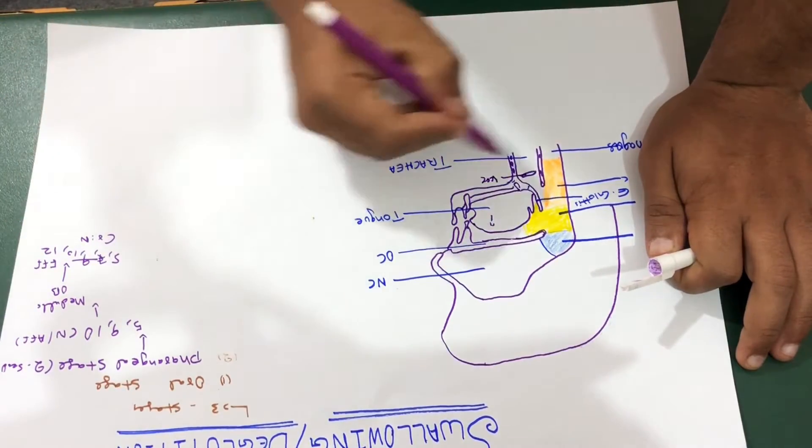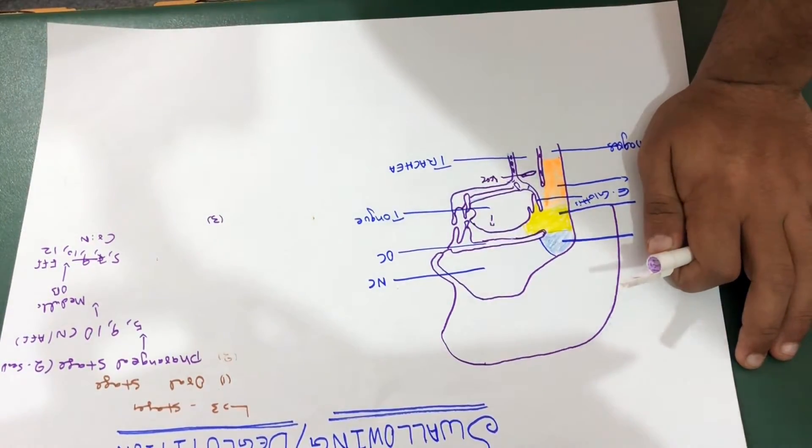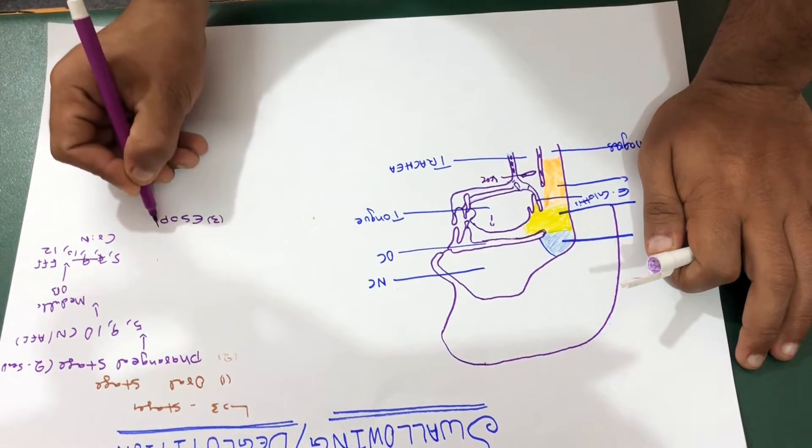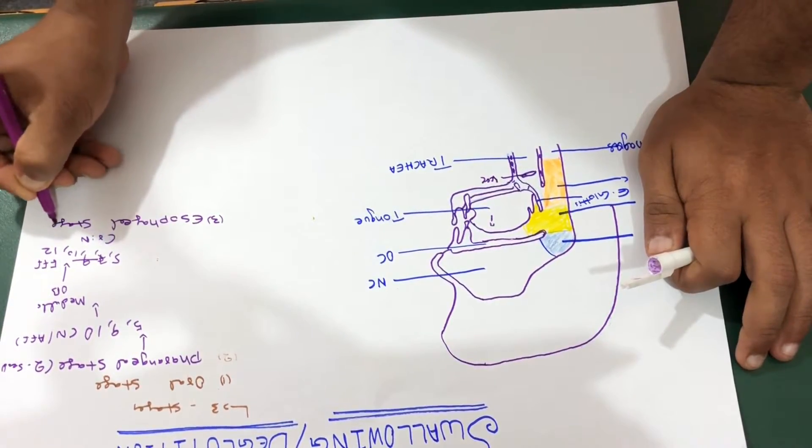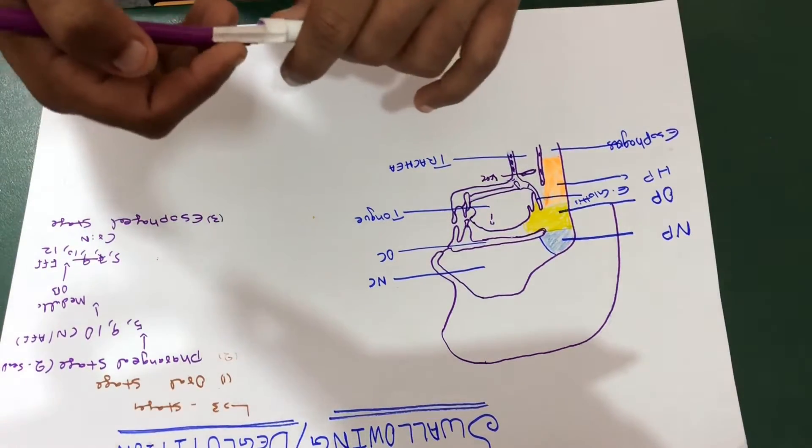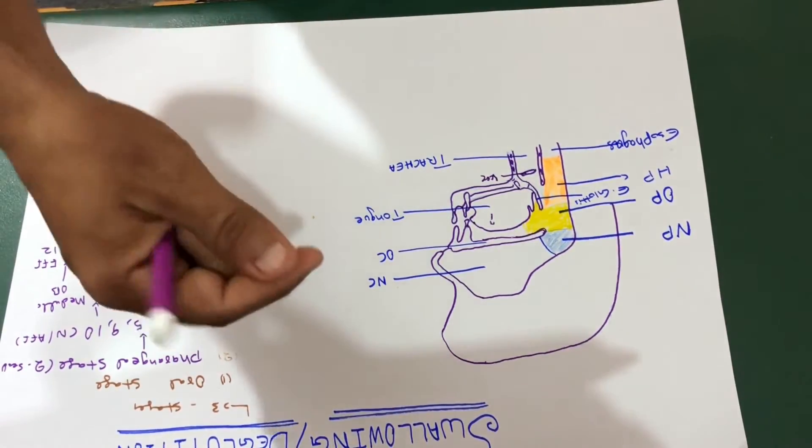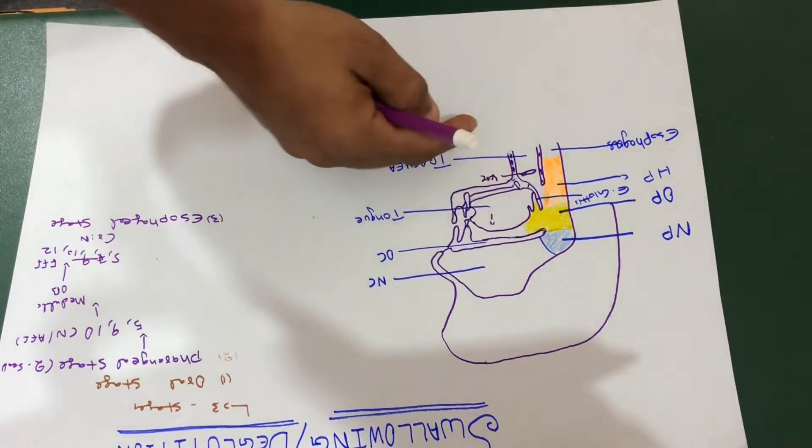And finally, as food enters into the esophagus, the third stage starts which is called the esophageal stage. What happens in esophageal stage is simply: it functions to conduct food from your pharynx to your stomach.